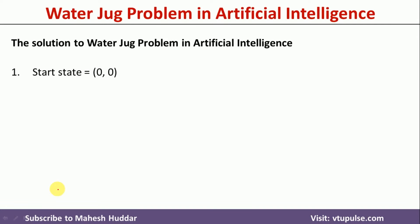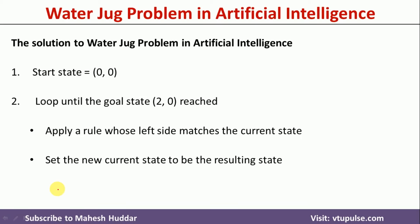The general approach is to start at state (0, 0) and, until we reach the goal state (2, 0), apply a rule whose left-hand side matches the current state to obtain the next state. We keep applying rules until the goal state is reached. Because we have 12 production rules, multiple solutions are possible. I will give you two solutions, and if you apply the rules differently you may find other solutions as well.